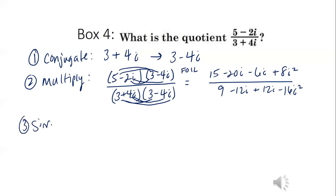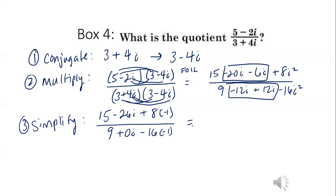All right, so step three is we simplify what we just multiplied. Simplify means combining like terms and taking our i squareds and making them negative one. So now I have 15 minus 26i plus 8 times negative one. That's my numerator. Here, combine like terms of 9 plus 0i minus 16 times negative one. So simplifying this, I have 15 minus 8. What's 15 minus 8? Seven. So I have 7 minus 26i in the numerator. In the denominator I have a negative times a negative is a positive, so what's 9 plus 16? 25.